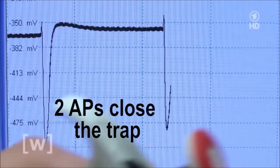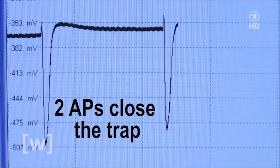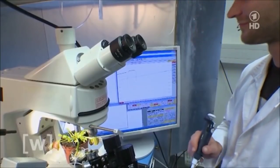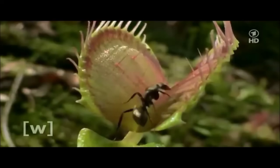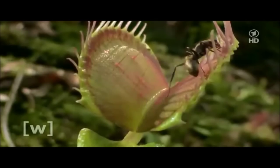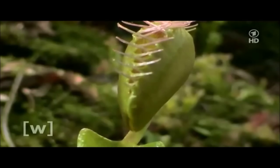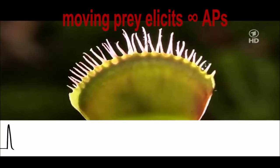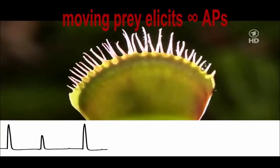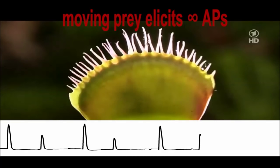Two action potentials are required to close the trap. The trapped insect struggles to escape the green cage, repetitively touching the trigger hairs. Trains of action potentials excite the flytrap, and the panicking insect elicits more than 50 action potentials per hour.